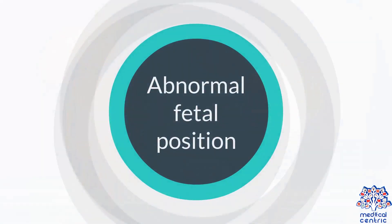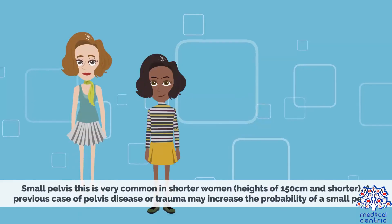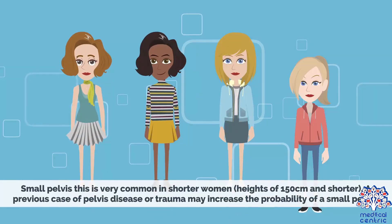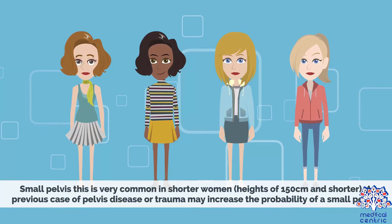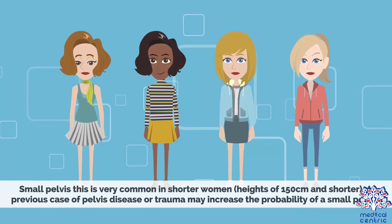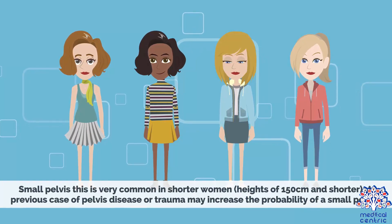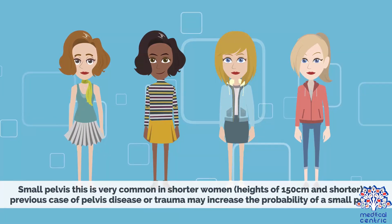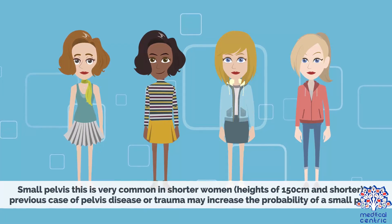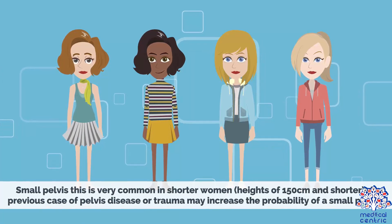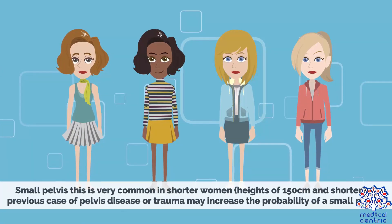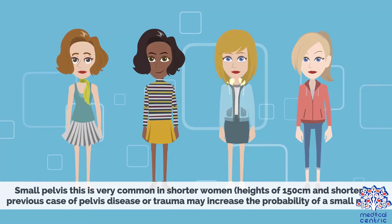Additional causes include abnormal fetal position and a small pelvis, which is very common in shorter women — heights of 150 centimeters and shorter. A previous case of pelvis disease or trauma may also increase the probability of having a small pelvis.